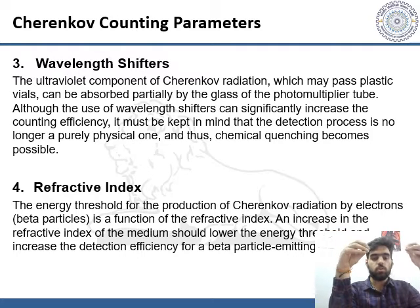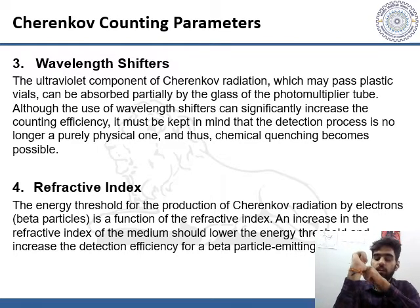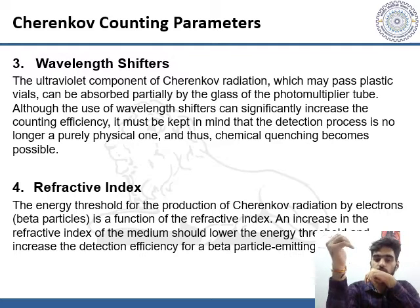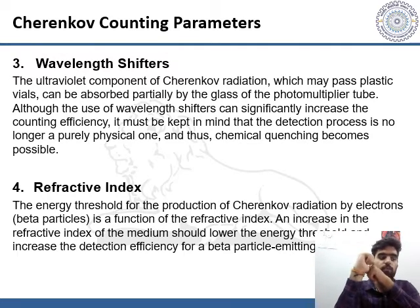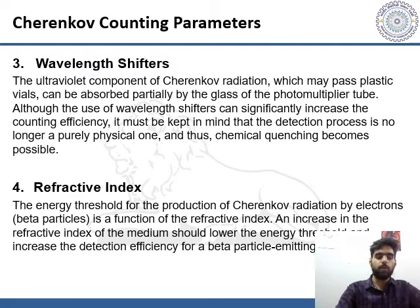For refractive index: the energy threshold for the production of Cherenkov radiation by electrons is a function of refractive index, as we have earlier shown that a certain refractive index is needed for Cherenkov radiation to be emitted. An increase in the refractive index of the medium lowers the energy threshold and increases the detection efficiency for beta-particle-emitting radionuclides.